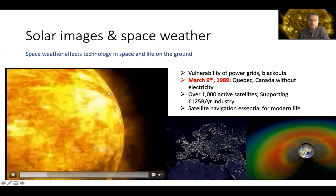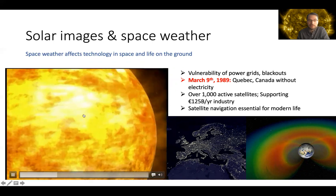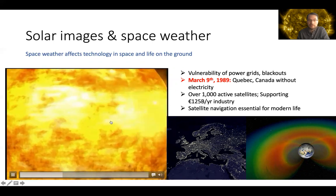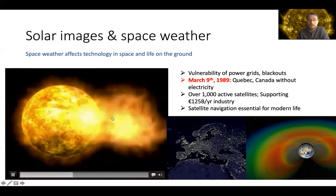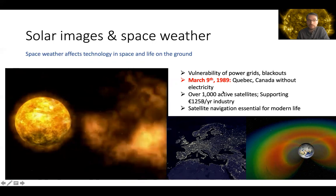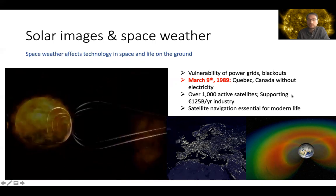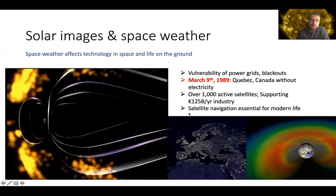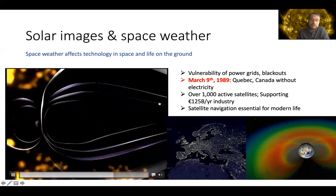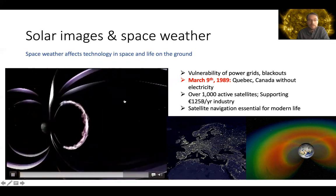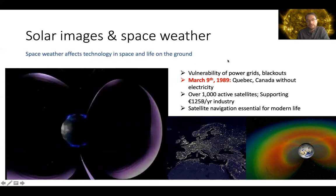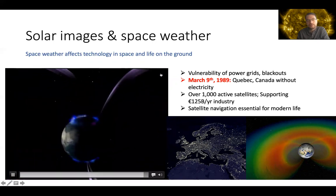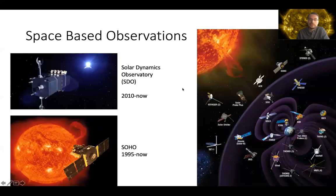We want to understand this more. We can have, for example, CMEs — these eruptions that come from the sun — and they can hit Earth and cause damage, for example, to satellites. We want to understand when these events are triggered. Solar images can be a good source for the first understanding of these effects.